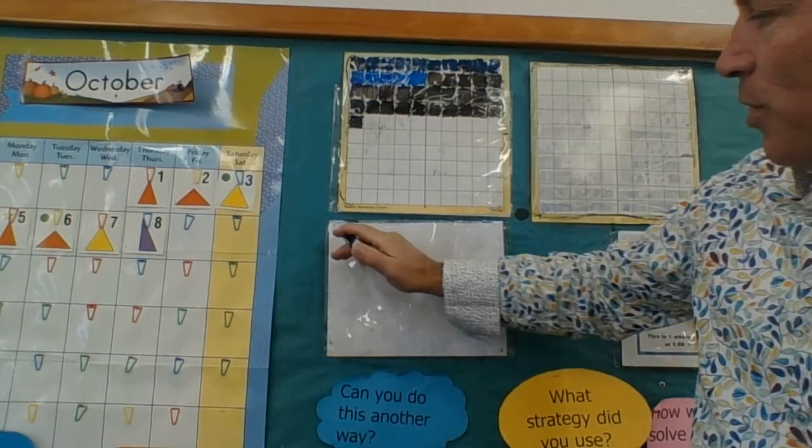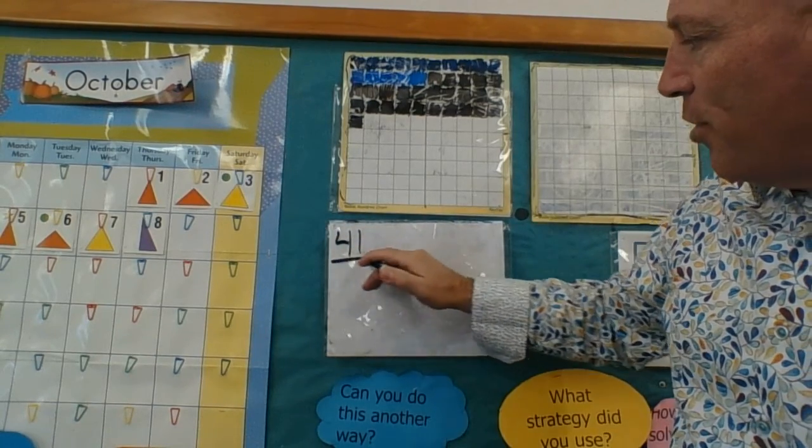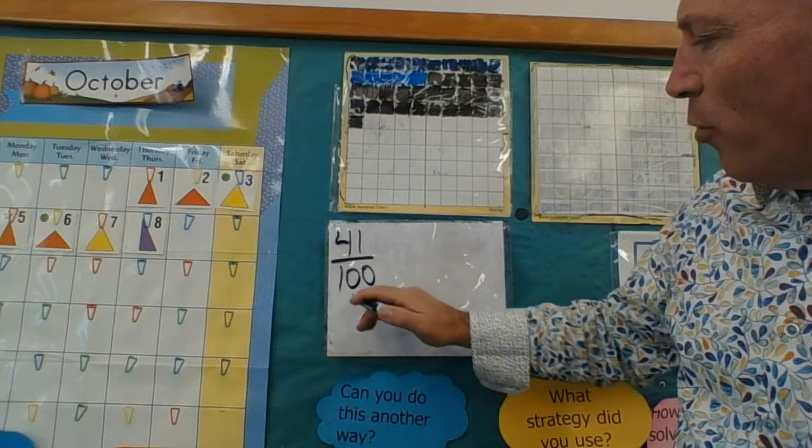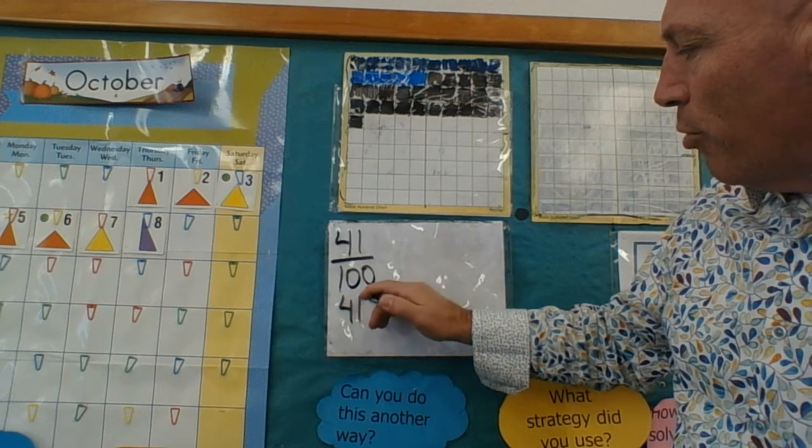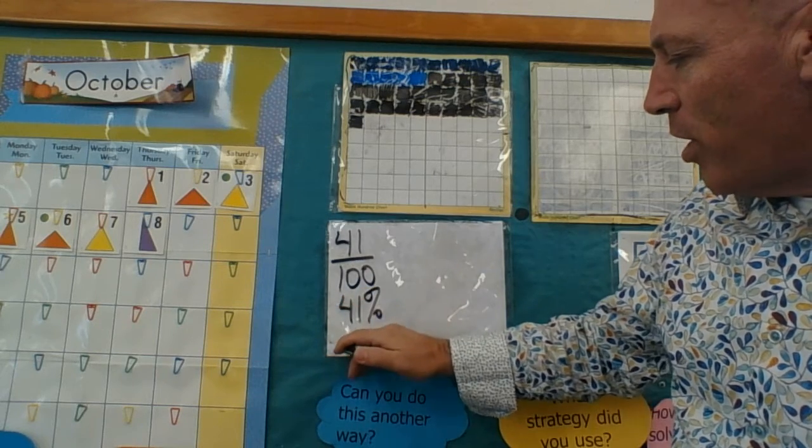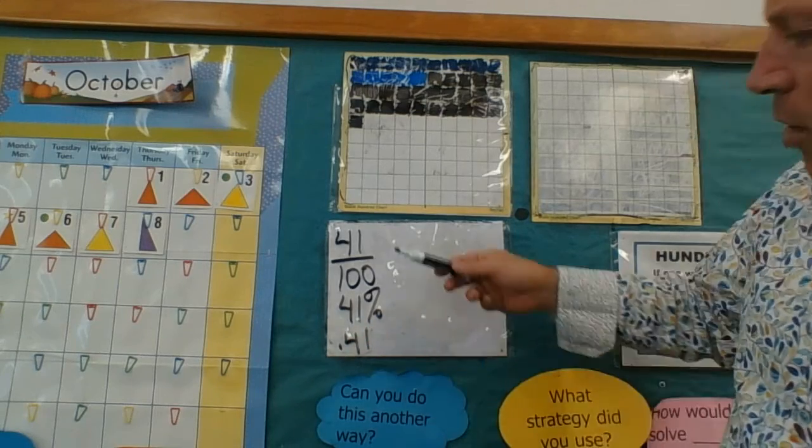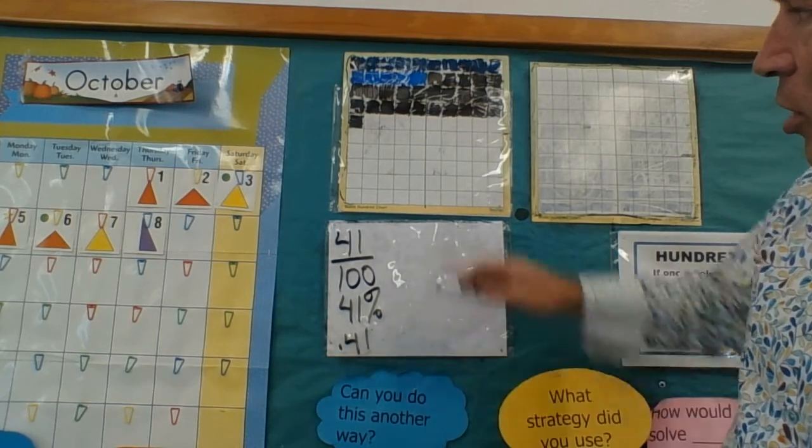Now for application, we have 41 out of 100. Another way of writing that is 41%, and another way of writing that is 41 hundredths. We kind of went over this one today early on, showing how all of these are equivalent representations.